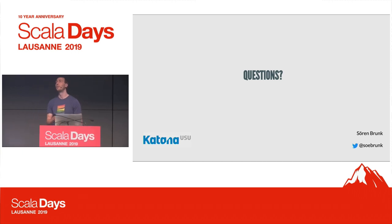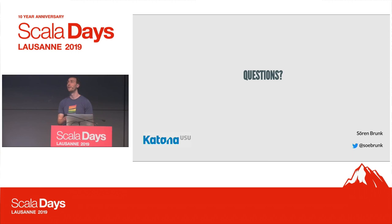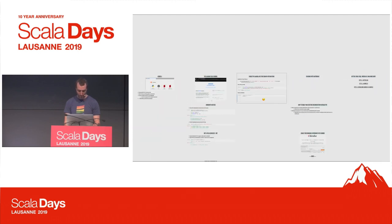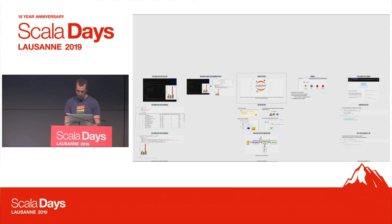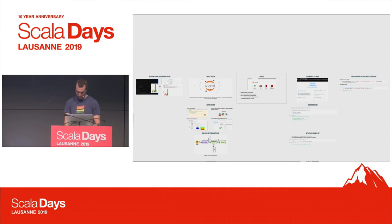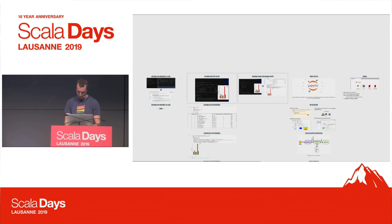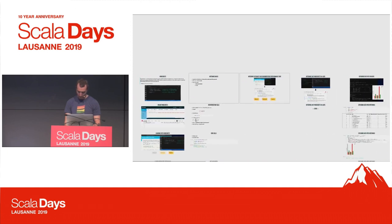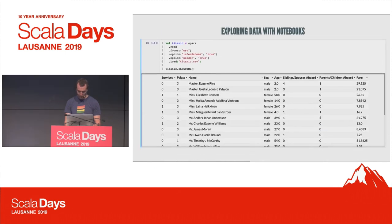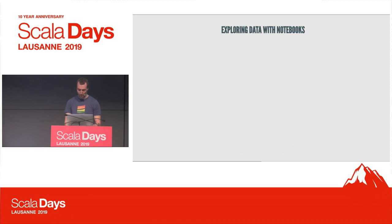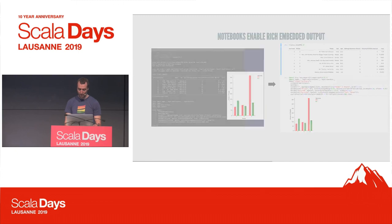Thank you for the talk. Could you list the plugin you used in the presentation? The plugin is called Rise — if you just Google it, you'll find it. Quick question regarding Spark — is there in Almond some way of doing paging? Because usually the problem with notebooks is that you take data out of Spark, you get a lot of data, and then your server is going to die at some point.